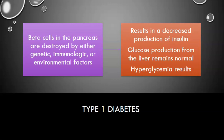When we talk about type 1 diabetes, this is related to the beta cells in the pancreas, which are destroyed by either a genetic component, an immunologic component, or other environmental factors. So the pancreas is not able to produce as much insulin as the body needs, or any insulin at all — we have that decreased insulin production.